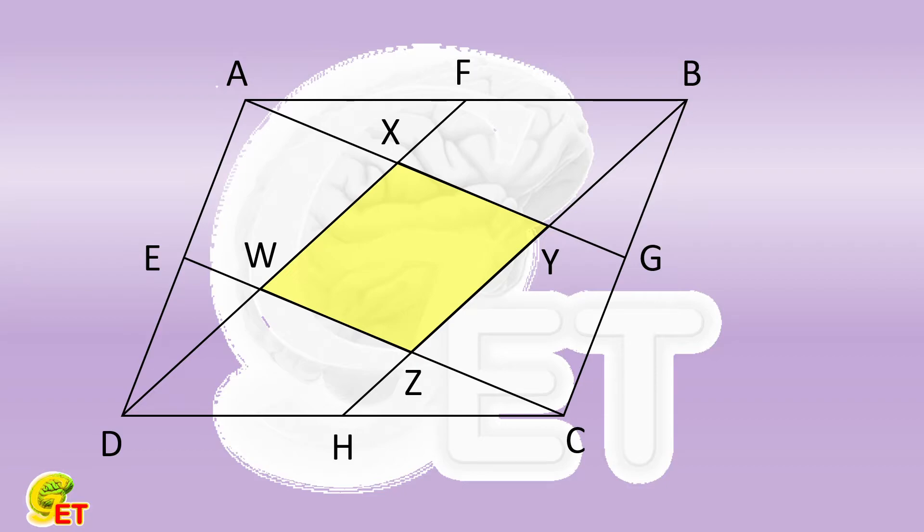We thus get that AG is parallel to EC. For the same reason, DF is also parallel to HB. As a result, WXYZ is a parallelogram. So we proved it.